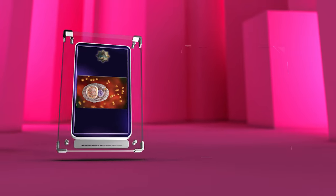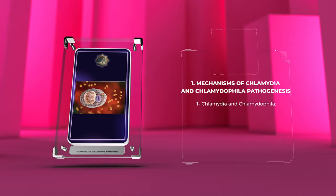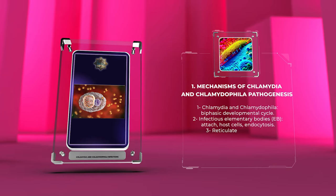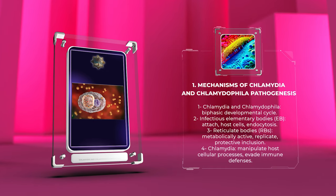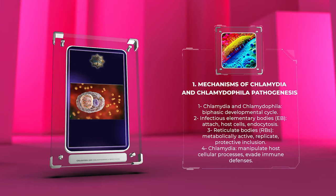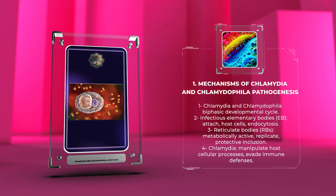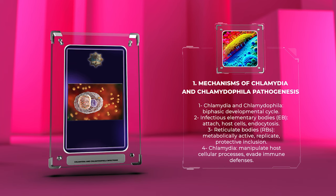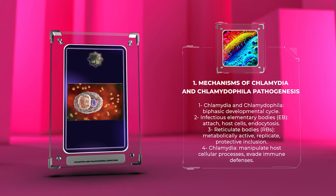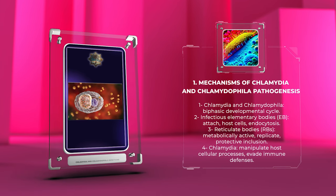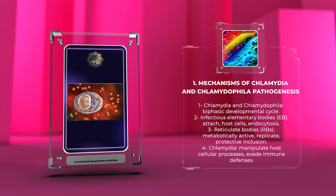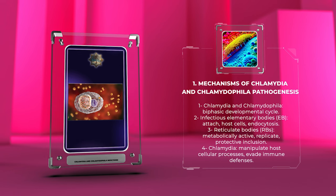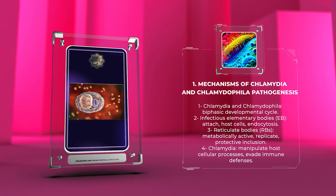The unique biphasic developmental cycle of chlamydia and chlamydophila involves infectious elementary bodies (EBs) attaching to host cells and entering via endocytosis. Once inside, they differentiate into metabolically active reticulate bodies (RBs) that replicate within a protective inclusion.